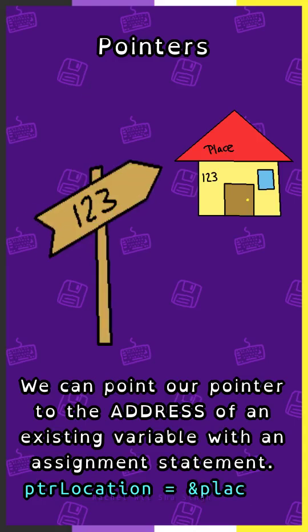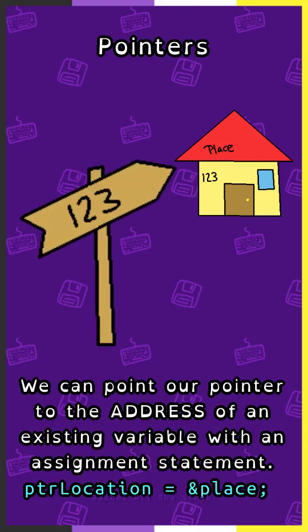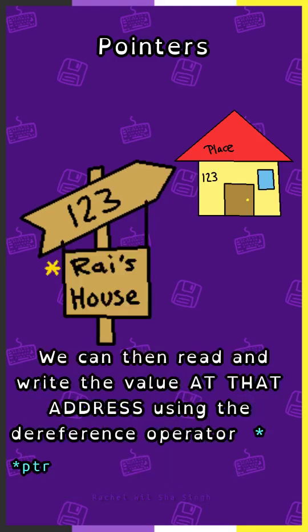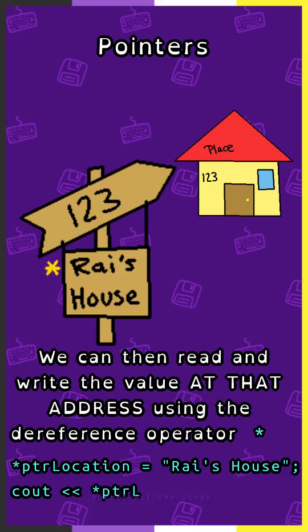We can point our pointer to the address of an existing variable with an assignment statement. Since the value of a pointer is a memory address, make sure to use the address-of operator on the pointed-to variable. We can then read and write the value at that address using the dereference operator, which is also an asterisk.